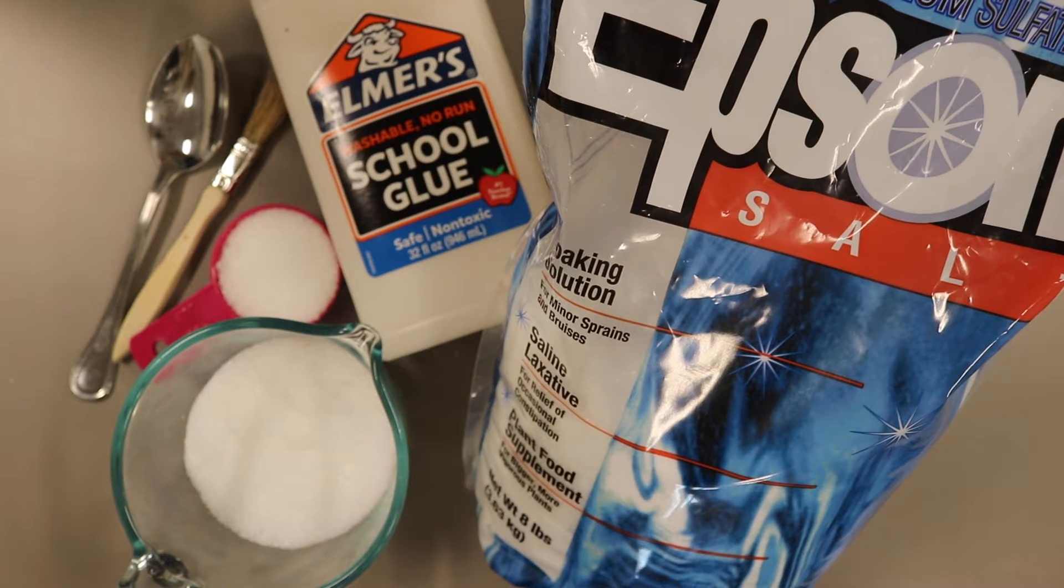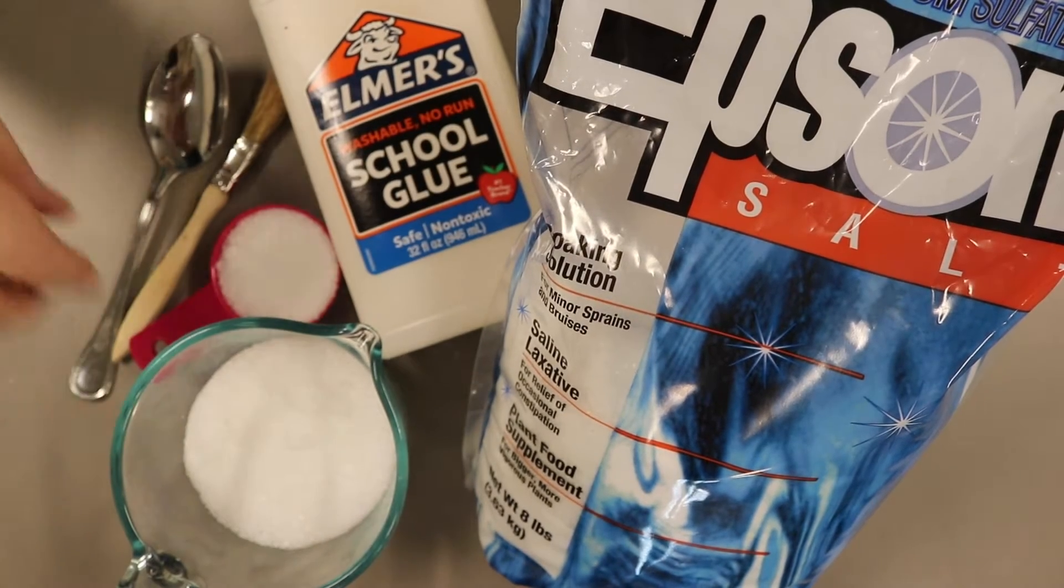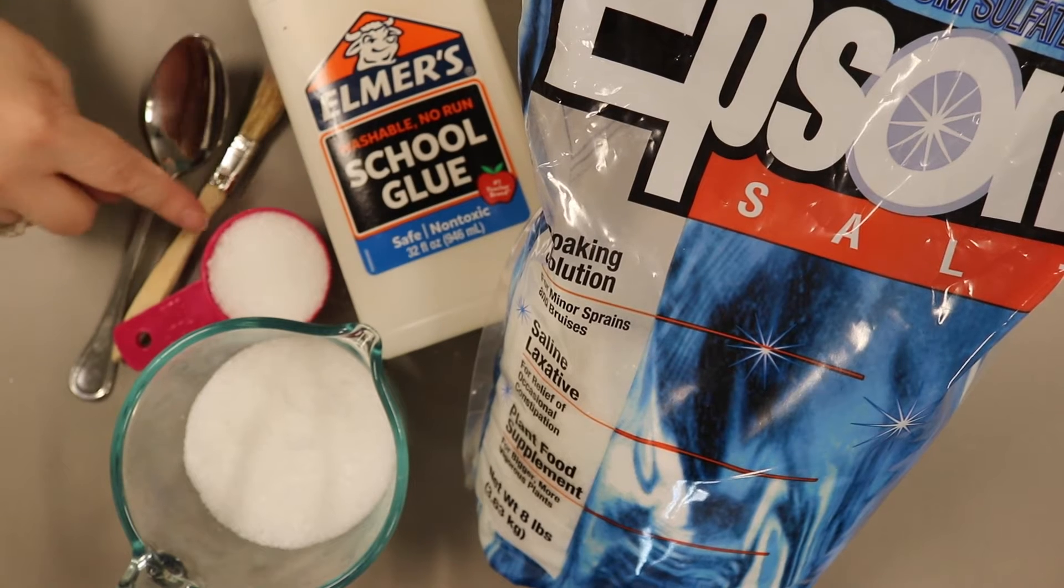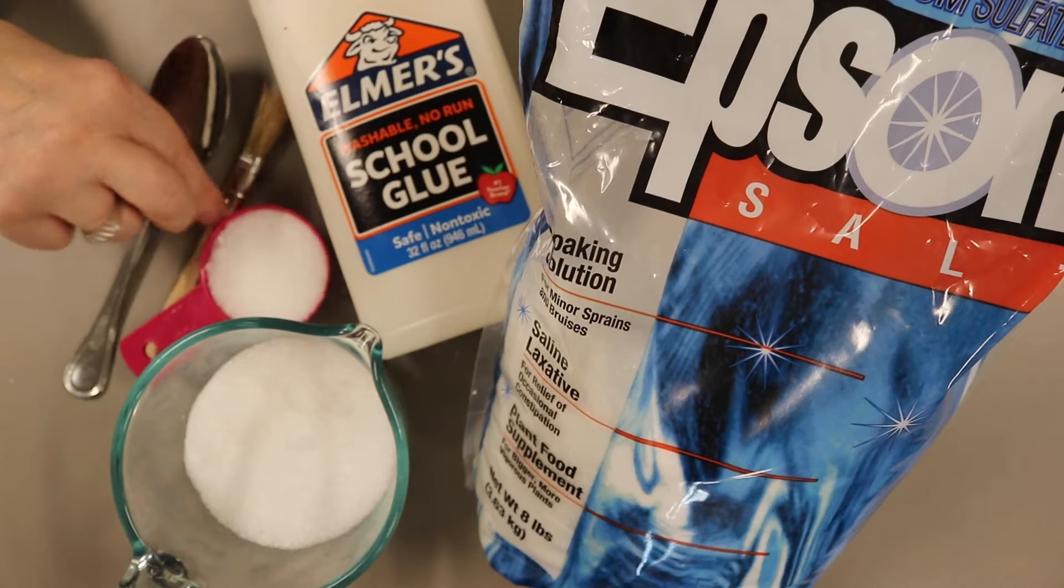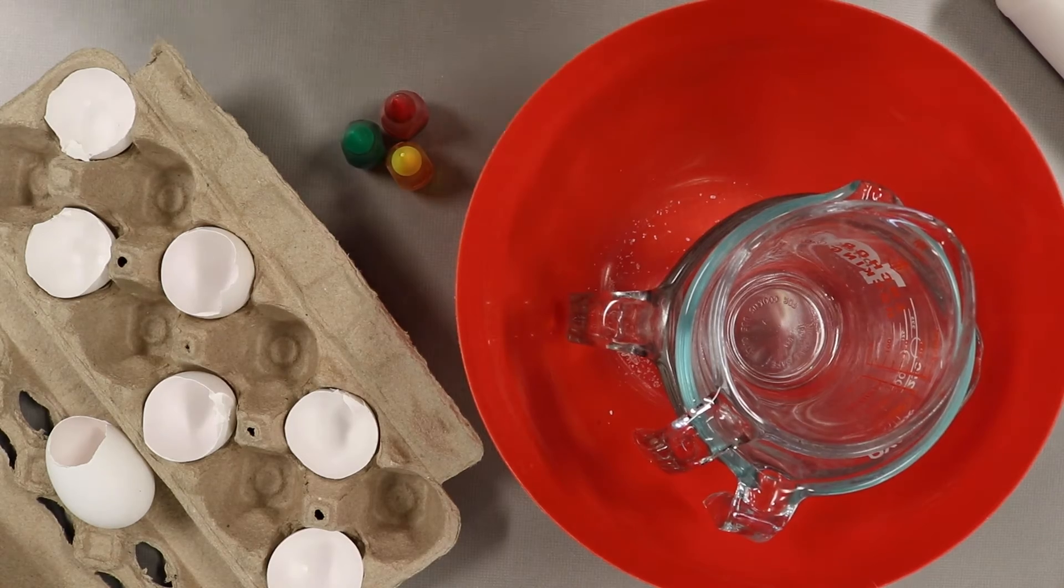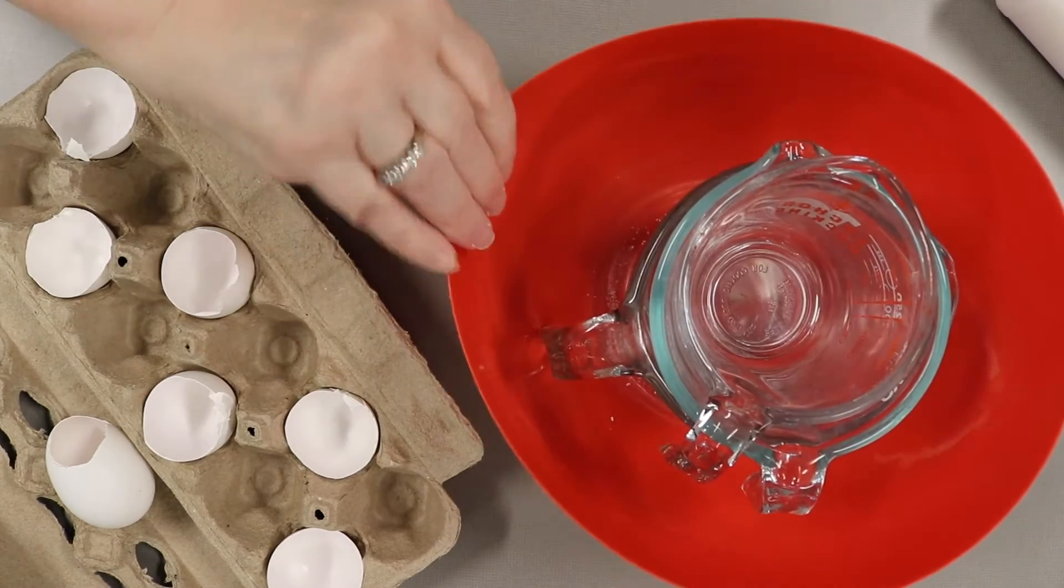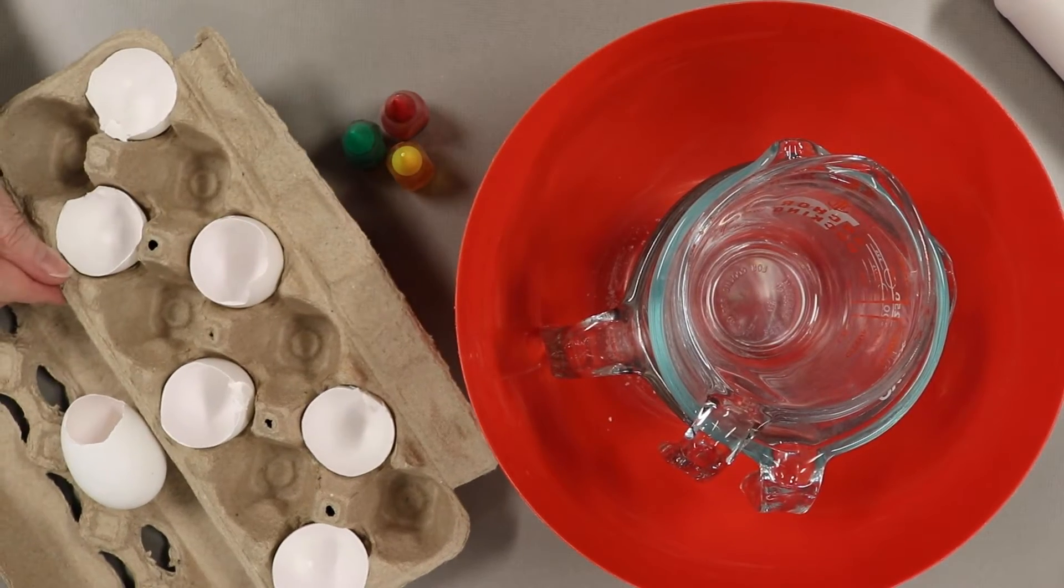Here are some of the things you'll need to make eggshell crystal geodes. You'll need Epsom salts, which I have in a measuring cup here and I have a quarter cup here, Elmer's glue, a paintbrush and a spoon. The paintbrush actually is optional. And we'll also need some measuring cups. I have three glass ones here, a bowl, food coloring, and eggshells.